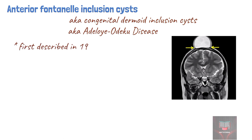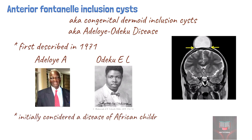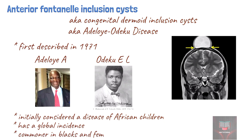It was first described by Adeloye Abe and Odeku Ehele from Nigeria in 1971. It was initially considered a disease of African children. However, authors across the globe have subsequently reported similar lesions in various regions. It is most frequently seen in black individuals or those with black ancestry, and is more commonly seen in women, being twice as common in females than males.